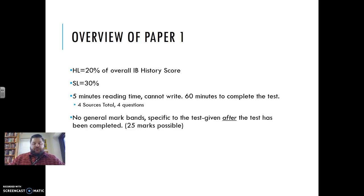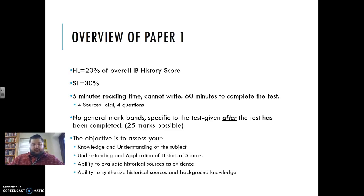With paper 1, there's no general mark band. They're specific to the test. We don't even see them until after the test has been completed. There are 25 marks possible, and you can see the objectives there.